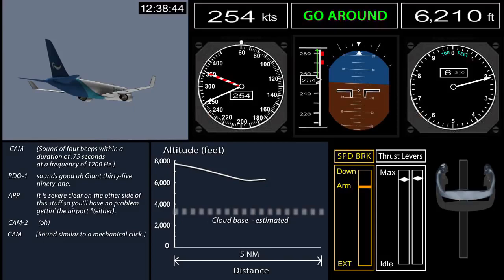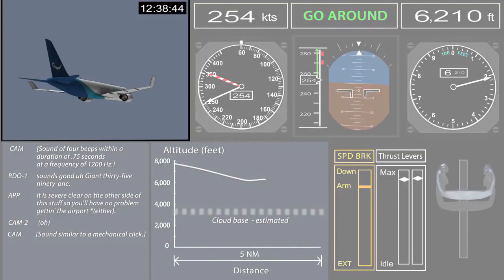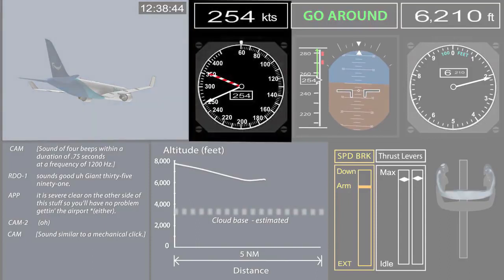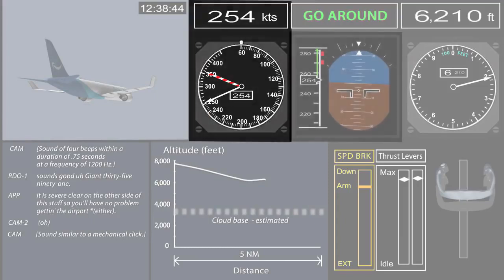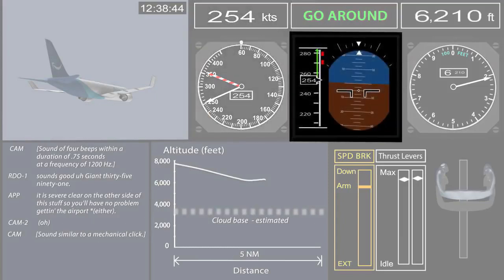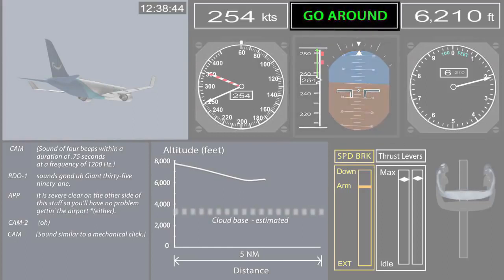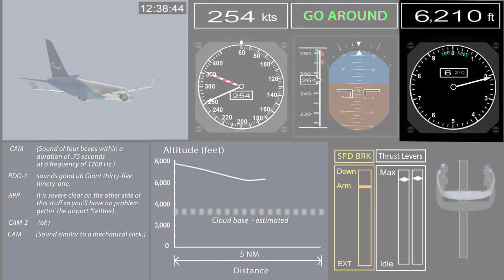In this still frame, you can see a simulated external view of the airplane, the analog airspeed indicator with digits to aid clarity, the main attitude director indicator including an airspeed tape display and artificial horizon, and a representation of the flight mode enunciator display, as well as an analog altimeter also with digits added for clarity.